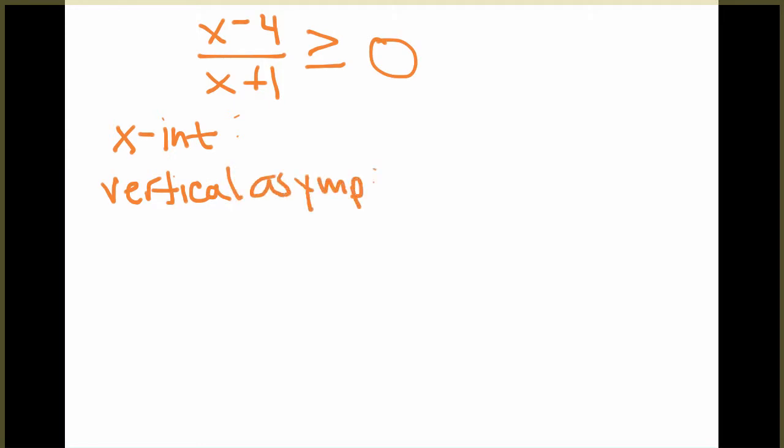If you think back to the properties that we talked about in our past class, the x-intercepts always come from when the numerator is equal to 0. So in this case, our x-intercept will just be at x equals 4.